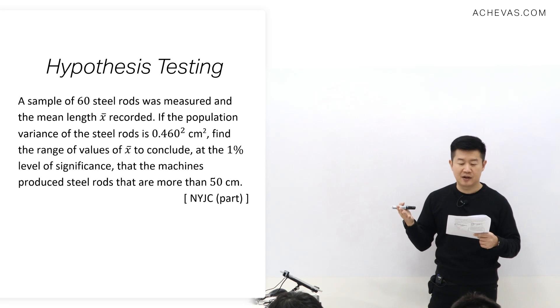Actually, we don't know X-bar. We're supposed to calculate the range of values of X-bar to conclude at 1% level of significance that the machine is producing steel rods that are more than 50 cm.